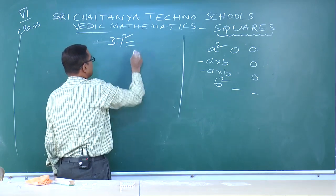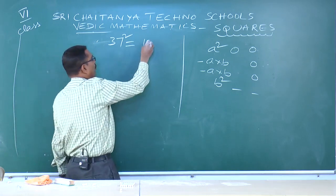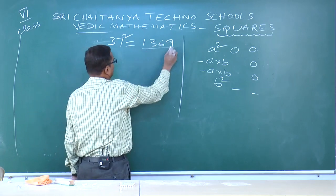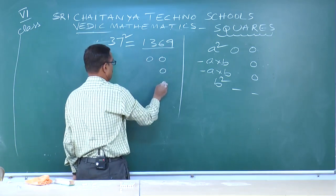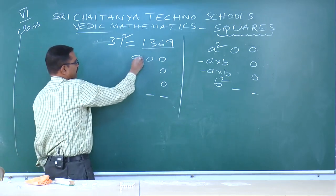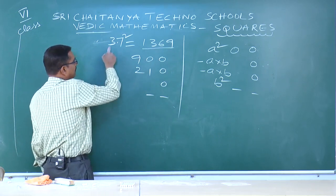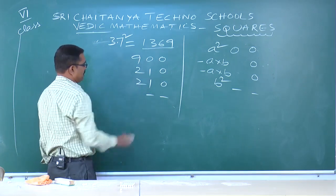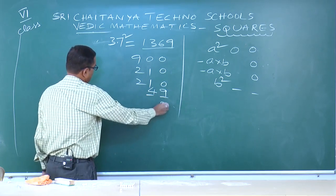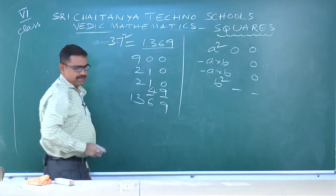Next: 37². Here a=3, b=7. a²=3²=9, a×b=3×7=21, a×b=21 again, b²=7²=49. Add all — answer is 1369.